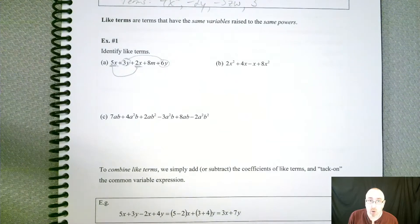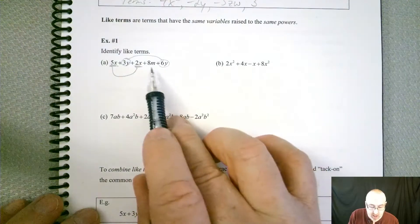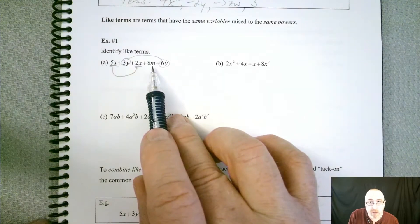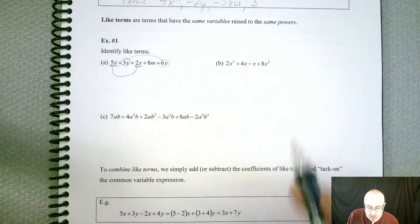So there's really just a bunch of terms here. So we've got our 5x. So all these individual pieces are all terms. So we can kind of see that 5x and 2x should go together. Likewise, 3y and 6y are going to go together as well. So those are the only pairs of like terms. In this case, 8m doesn't have anybody to go with them. So he's going to remain by himself. That's okay.